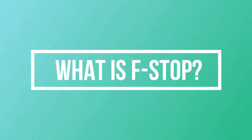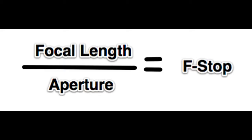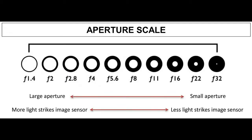Let us try to understand the mathematics behind f-stop. F-stop equals the focal length of the lens divided by the aperture opening of the lens. You can see the f-stop is inversely proportional to the aperture opening, which means when the f-stop increases the aperture opening decreases and vice versa. Please refer to the aperture scale which shows that as the aperture size decreases, f-stop increases.